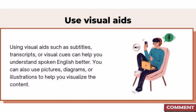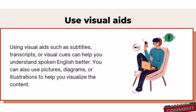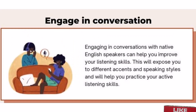Tip four — use visual aids. Using visual aids such as subtitles, transcripts, or visual cues can help you understand spoken English better. You can also use pictures, diagrams, or illustrations to help you visualize the content. Tip five — engage in conversation. Engaging in conversations with native English speakers can expose you to different accents and speaking styles and help you practice your active listening skills.